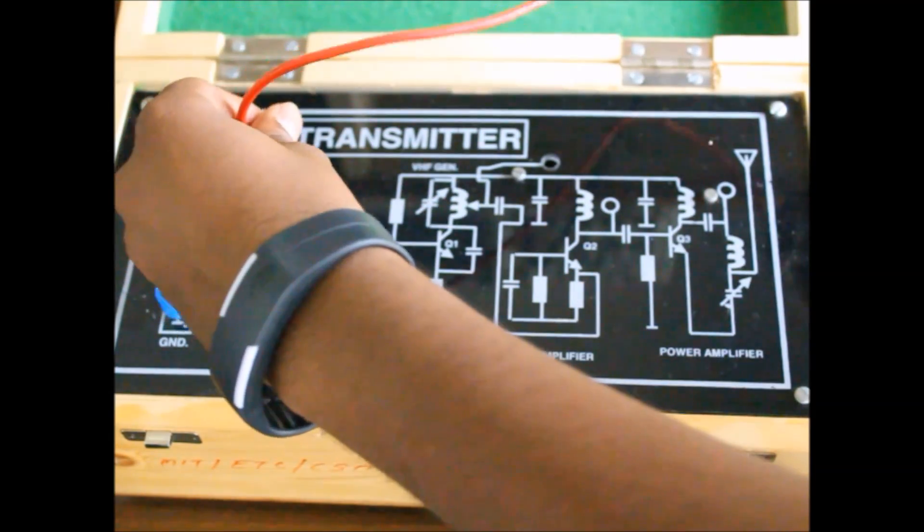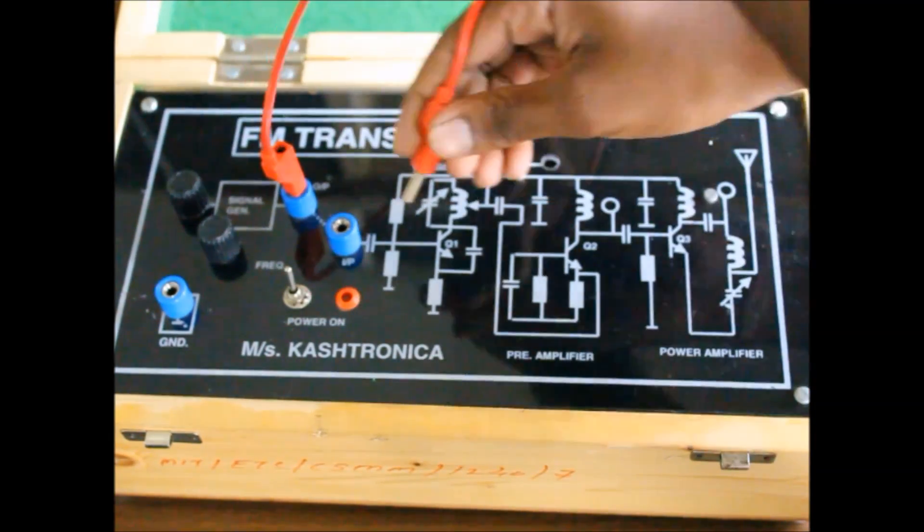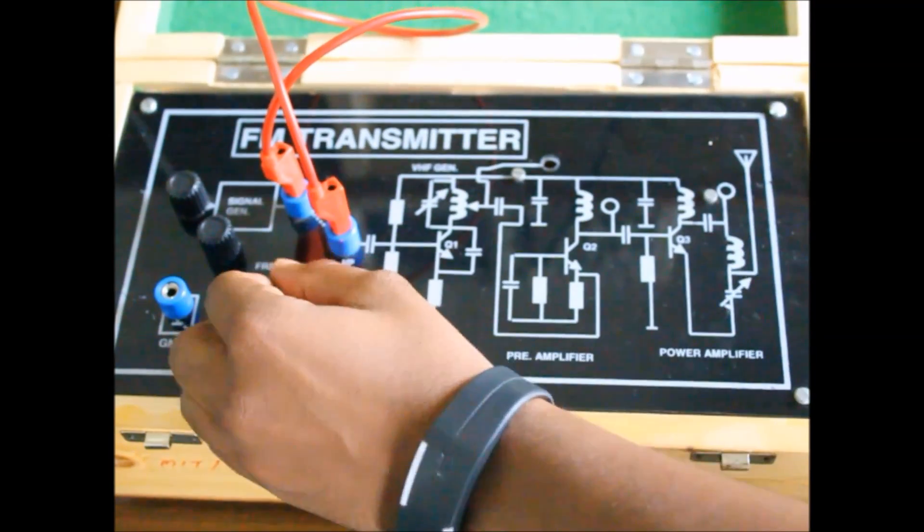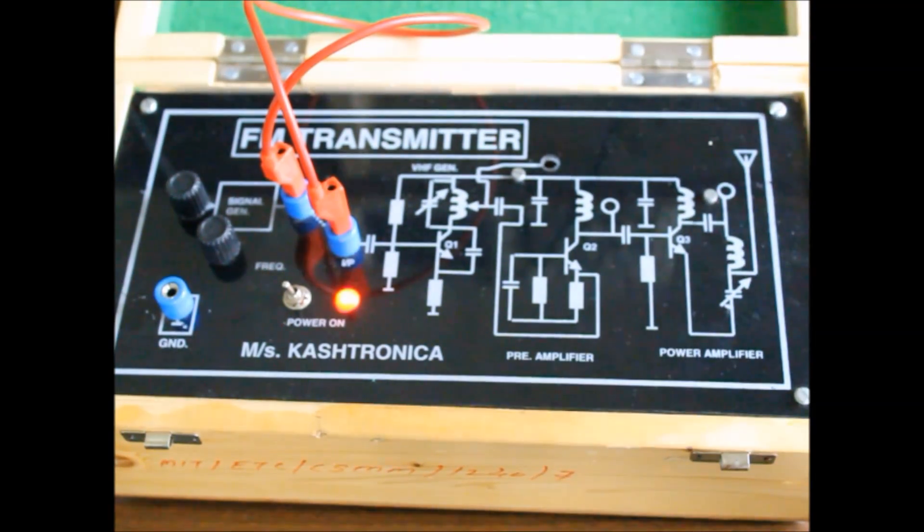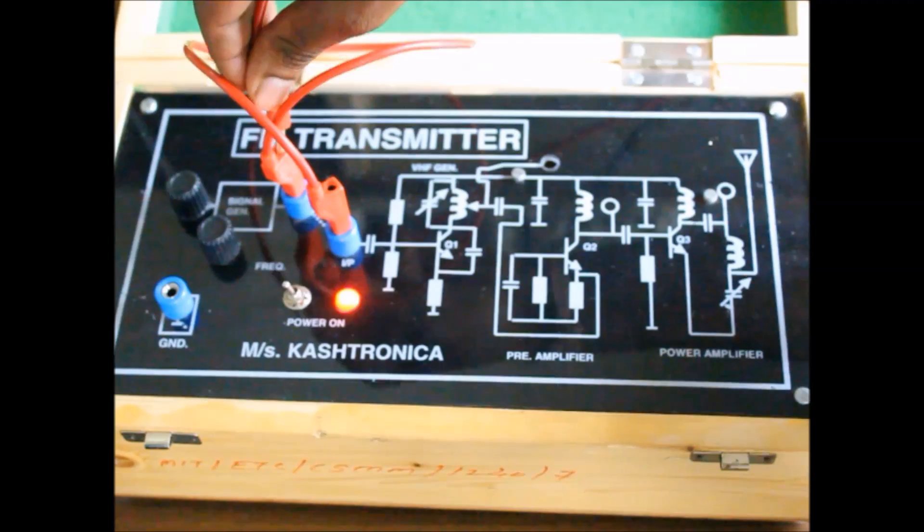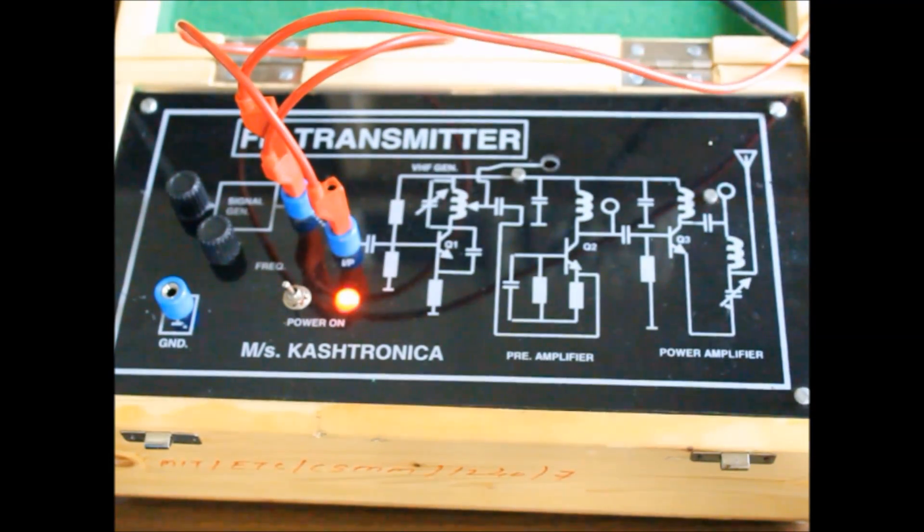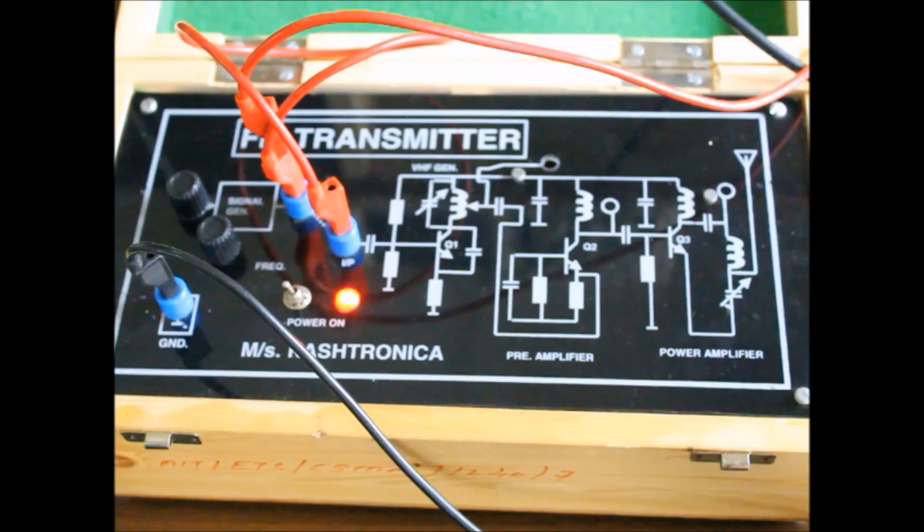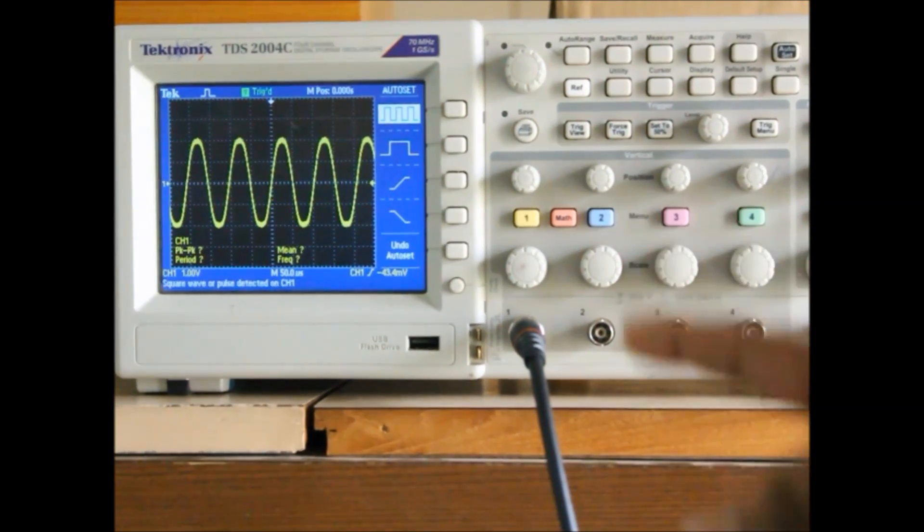So connections are quite simple. Simultaneously I will also view the FM signal, the modulating signal onto the oscilloscope. So this is our modulating signal.